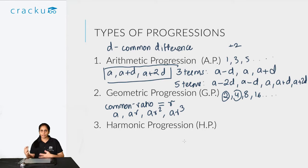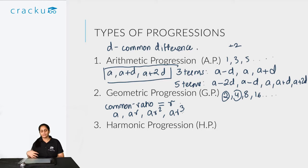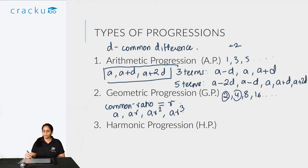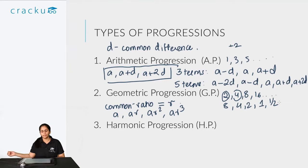We'll look at the formulas a little later. Note that the common difference D and common ratio r need not always be positive or greater than 1. D can be negative — making a decreasing series. Similarly, r can be less than 1, also giving a decreasing series. For example, 8, 4, 2, 1, ½ has a common ratio of 1/2. Both are valid GPs — what matters is that there is a constant ratio between consecutive terms.